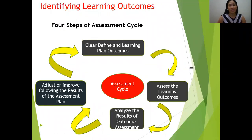Missouri State cited four steps of the assessment cycle: first, clearly define a learning plan outcomes; second, assess the learning outcomes; third, analyze the results of outcomes assessment; and fourth, adjust or improve following the results of the assessment plan.